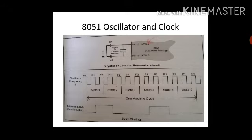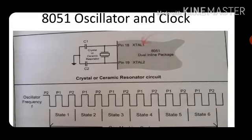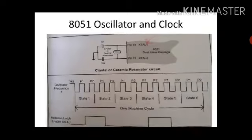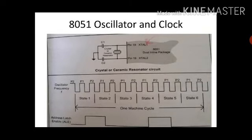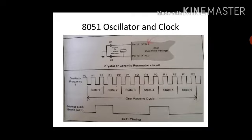As we know, 8051 at pin number 18 and 19 are connected with quartz crystal, maintained as XTAL1 and XTAL2. They are continuously producing clock frequencies as shown here — P1 and P2 — XTAL1 with P1, XTAL2 with P2. The continuous clocks are produced by 8051.